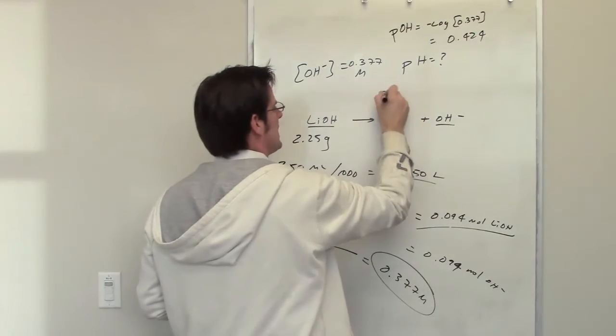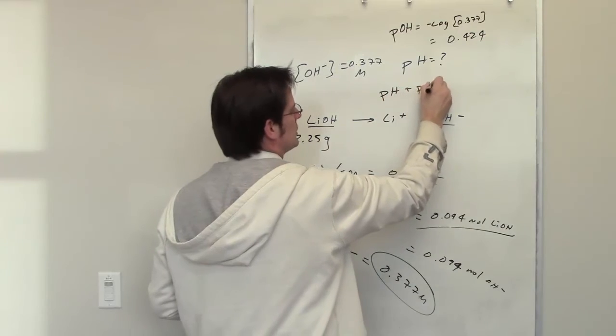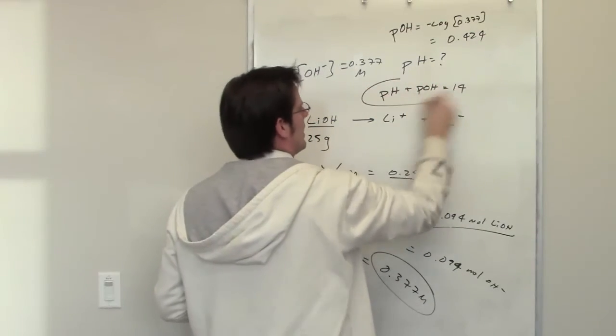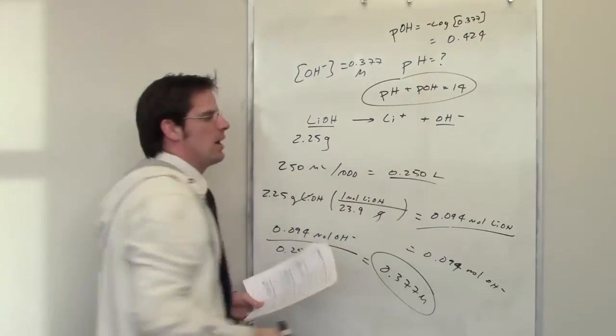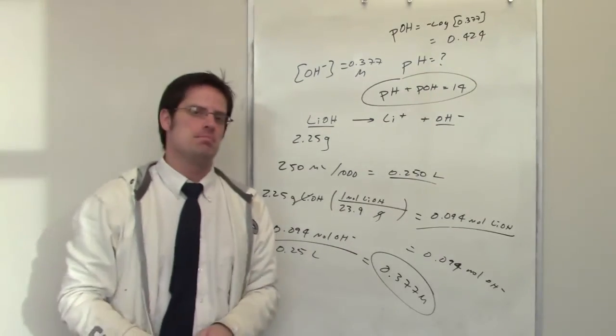How do I get pH from that? Well, pH plus pOH equals 14. I've got my pOH, throw it in here, rearrange it algebraically, and I can get my pH.